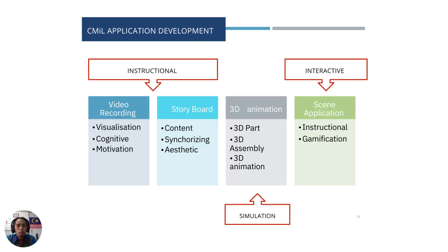Our developed AR consists of three areas. First, the instructional area, where we provide recorded videos to instruct the user on how to operate the machine. Second, we add simulation so the user can visualize what happens when they operate the machine. Third, for the interactive learning process, we add gamification — students must answer given questions so that they are aware of what they see and can hopefully answer correctly.